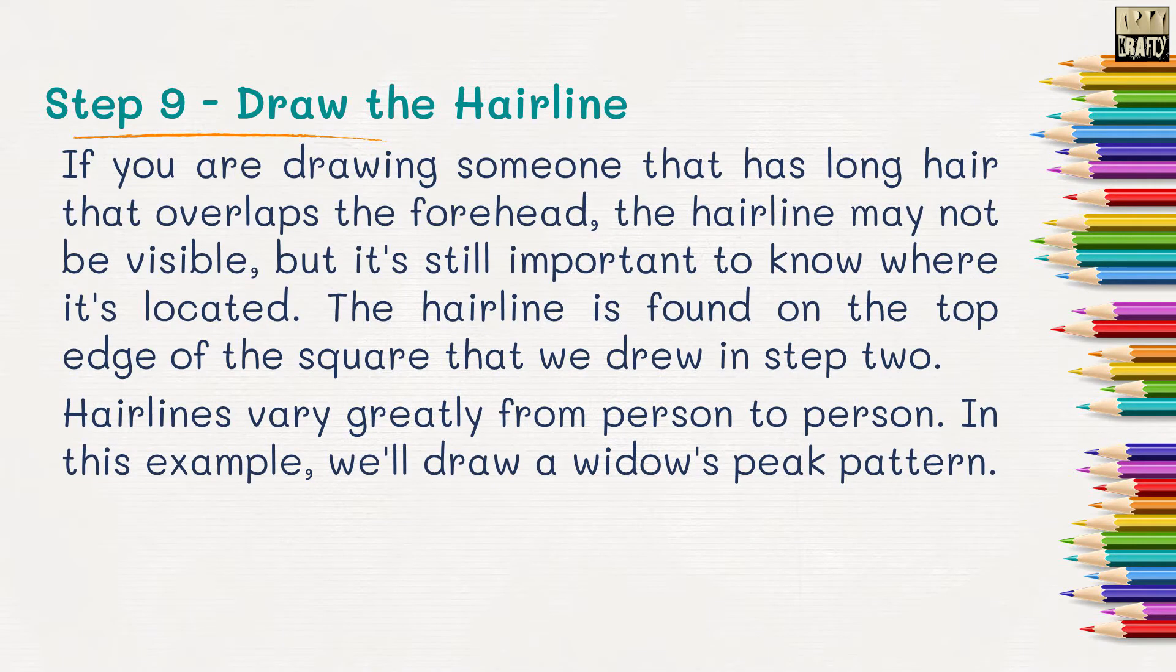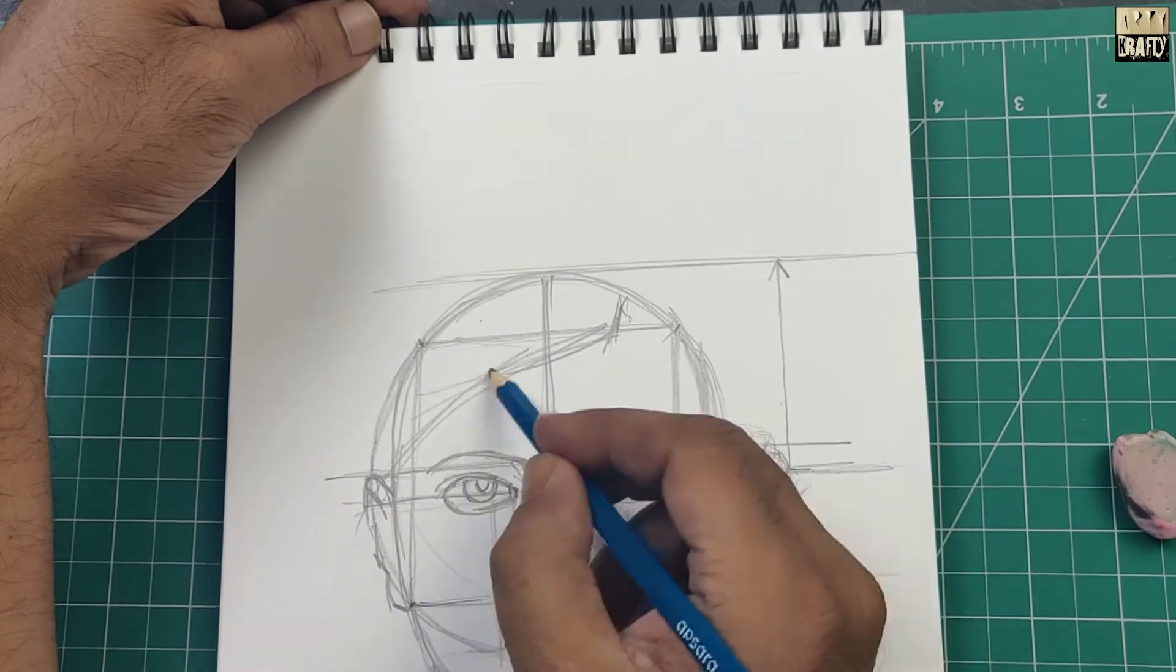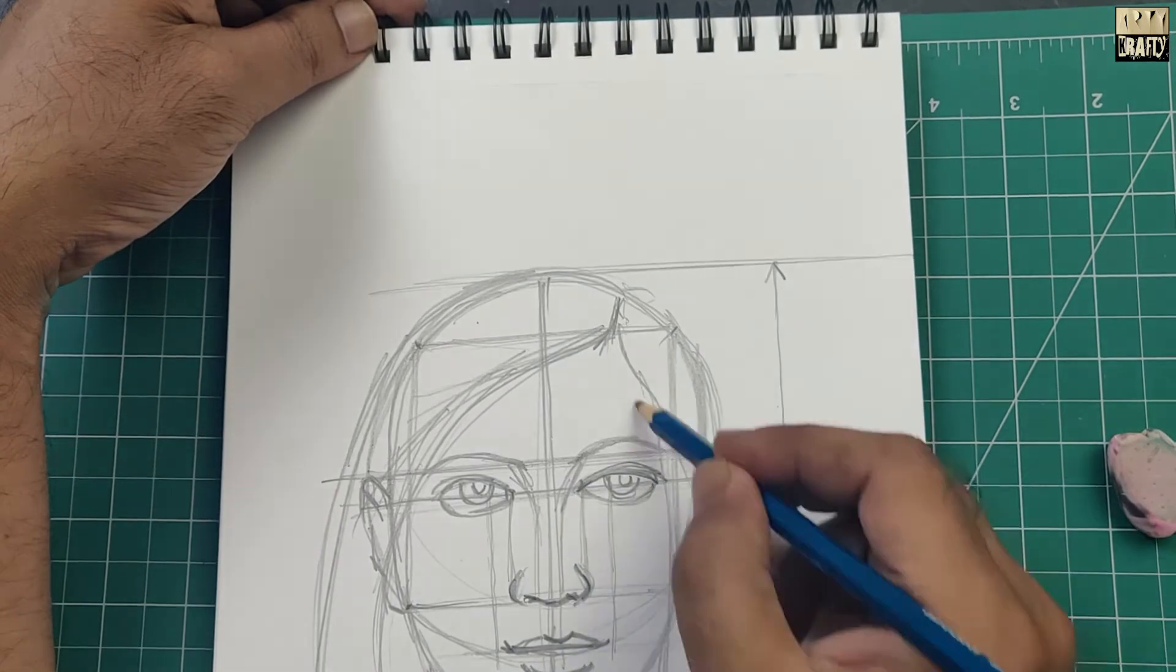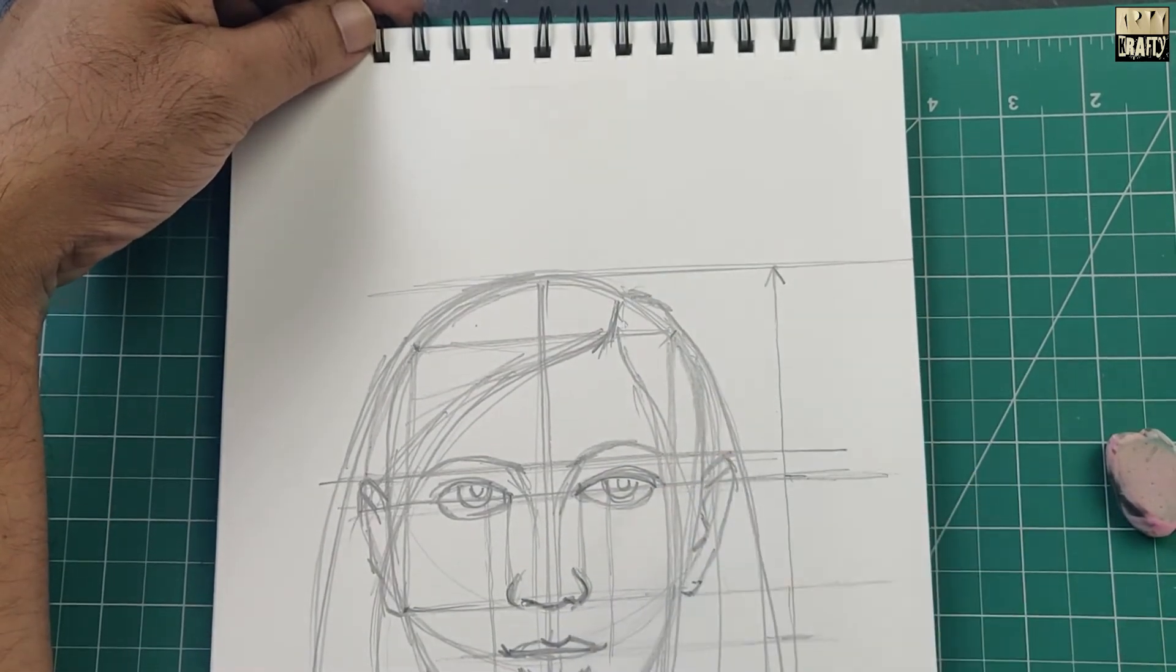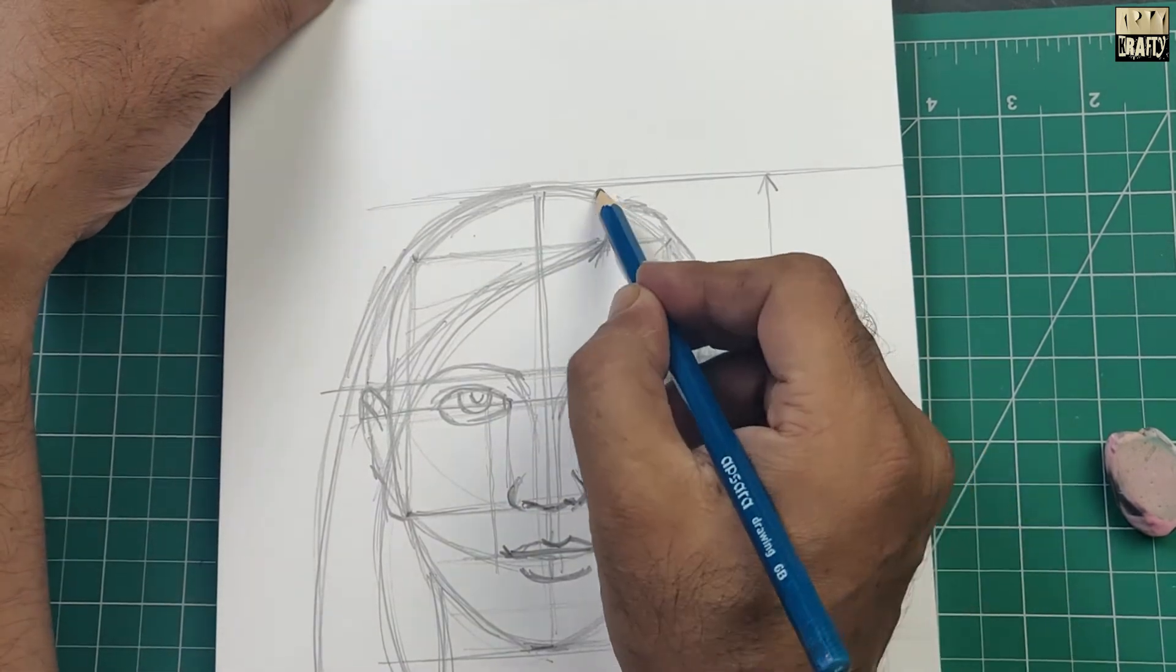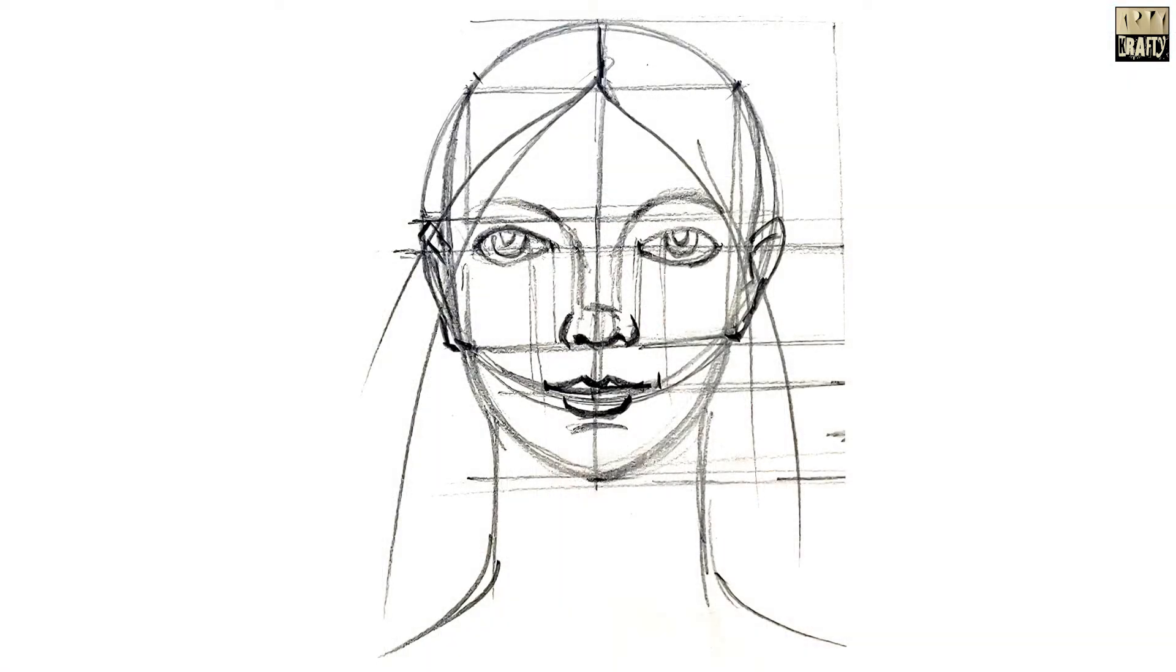Step 9. Draw the hairline. If you are drawing someone that has long hair that overlaps the forehead, the hairline may not be visible. But it's still important to know where it's located. The hairline is found on the top edge of the square that you drew in Step 2.